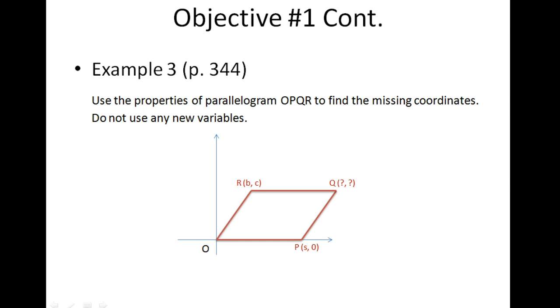Example 3 on page 344 says, use the properties of parallelogram OPQR to find the missing coordinates. Do not use any new variables. So here we have the parallelogram OPQR. We're given the coordinates for point R, which are B, C, and the coordinates for P, which are S, 0. And we're asked to find the coordinates for Q.